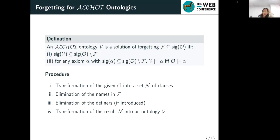And then I will introduce forgetting for ALCHOI ontologies. In this definition, this definition states that the forgetting solution V has the same logical entailments as the original ontology O in the remaining signature, the signature O minus F. And by this definition, we can see that V is the strongest entailment of O in this signature.